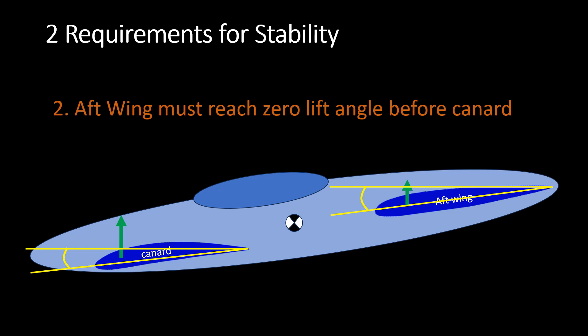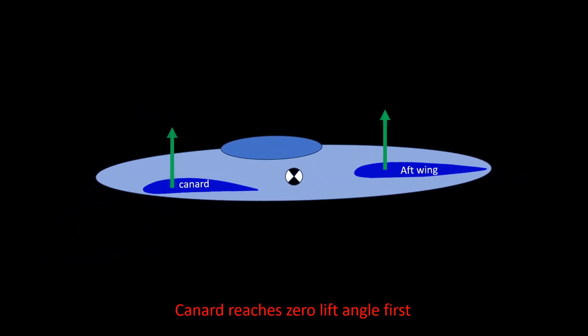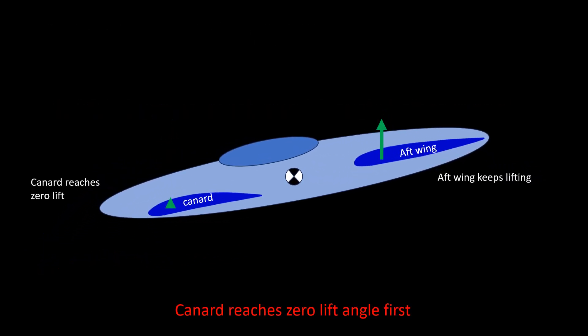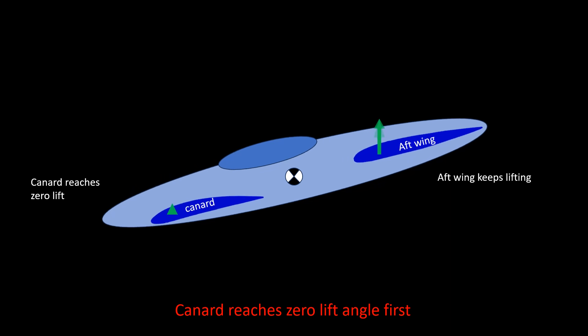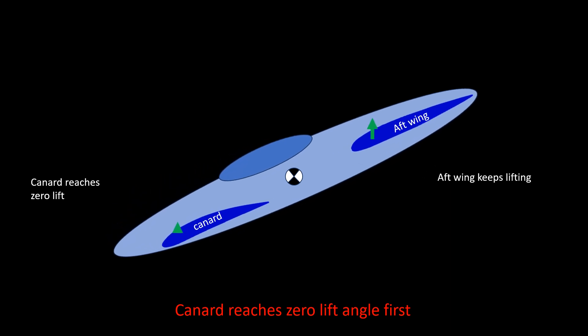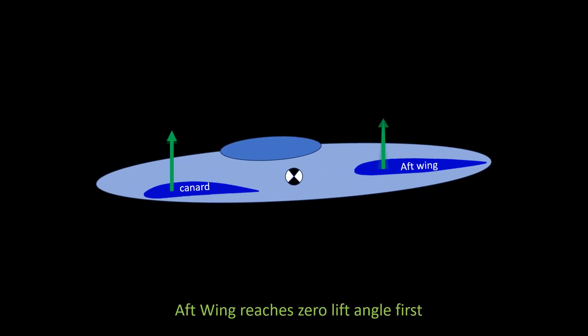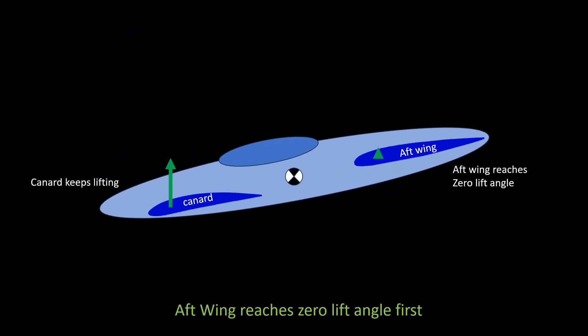This can be understood by thinking of the plane diving. In this nose-down condition, if the back wing keeps on lifting even if the canard reaches zero lift, then the dive will become worse. However, if the aft wing airfoil reaches zero lift first, then the lift of the canard will bring the plane's nose back to its original condition.